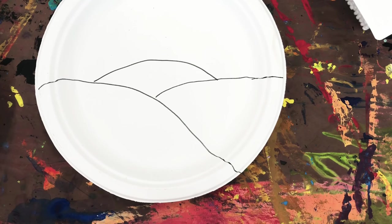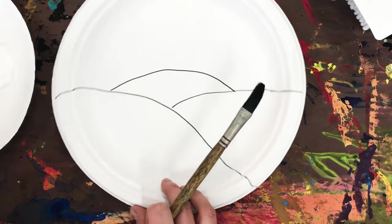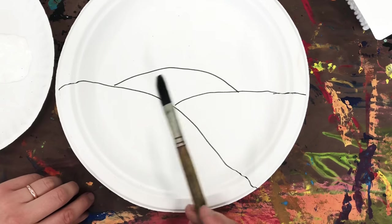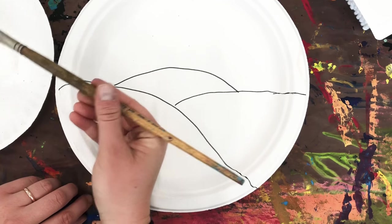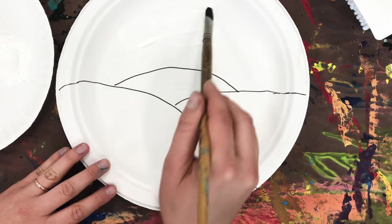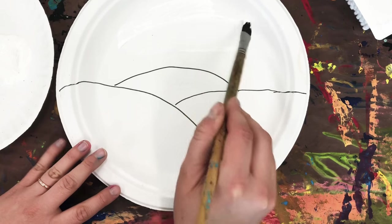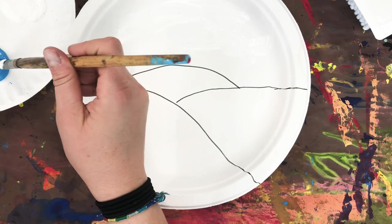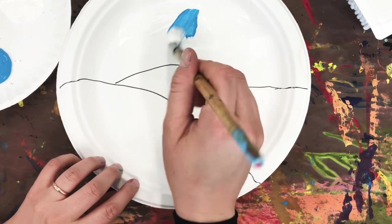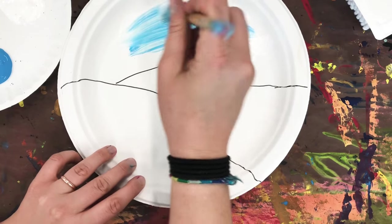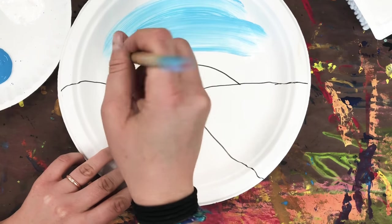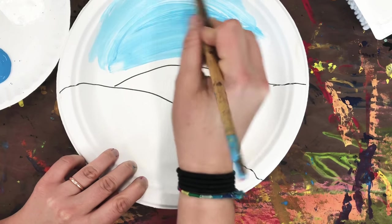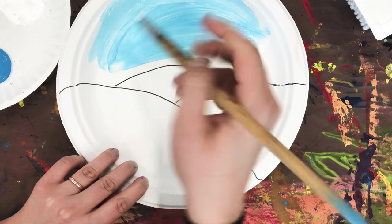Then I'm going to get ready to paint. To paint, I'm going to start in the sky and I want to do a light blue. So I'm going to start by taking some white paint, add some white paint to my plate. Then I'm going to just touch my blue paint and add that to my white paint. Now you see my blue is getting lighter, and I'm just going to use that light blue to paint the sky.